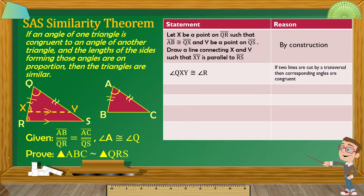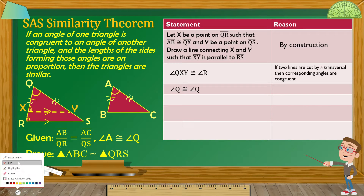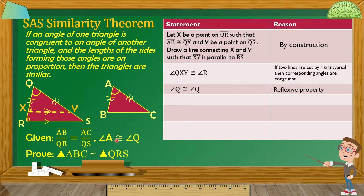And then, angle Q is congruent to angle Q — equal to itself — by the reflexive property. By cutting a line here, we formed two triangles within triangle QRS: the smaller triangle QXY and the bigger triangle QRS. So we have established that angle X and angle R are congruent, and angle Q equals itself.